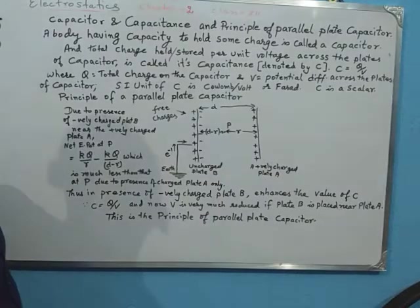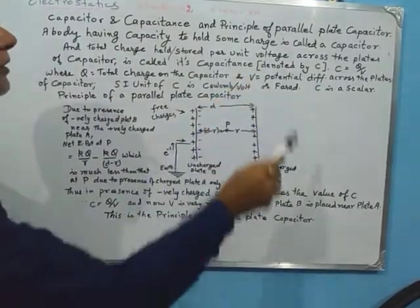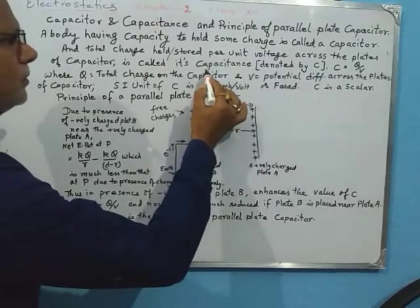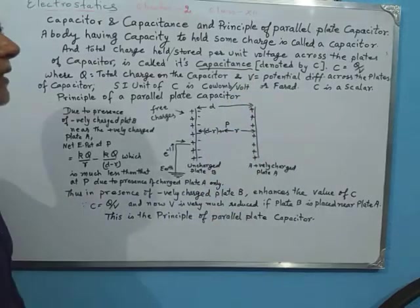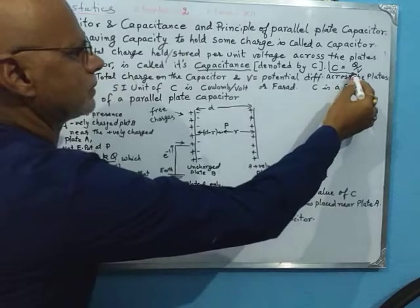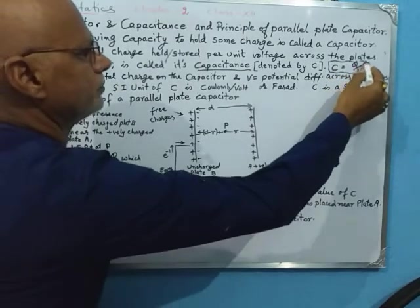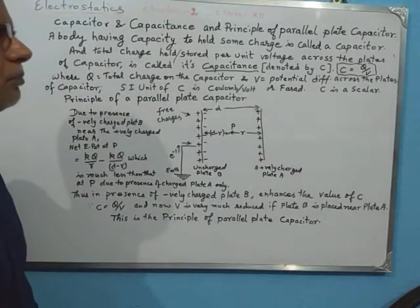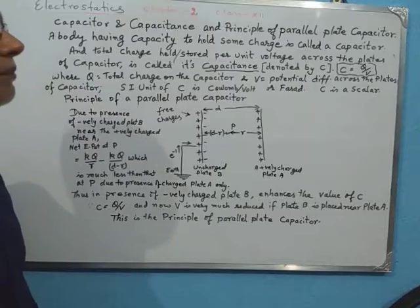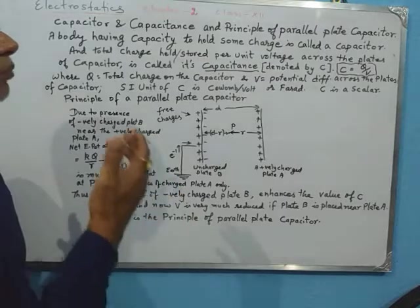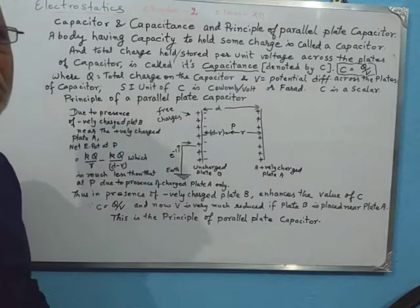In general, a body having the capacity to hold some charge is called a capacitor. The total charge held per unit volt across the plate is called its capacitance. This is expressed mathematically as C = Q/V, where Q is the total charge stored on the capacitor and V is the potential difference developed across the plate.